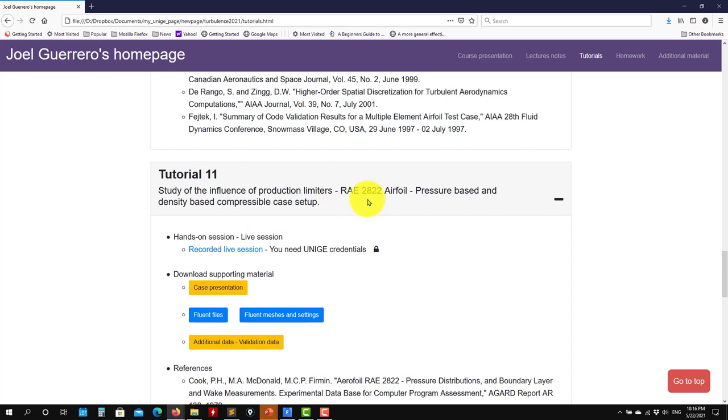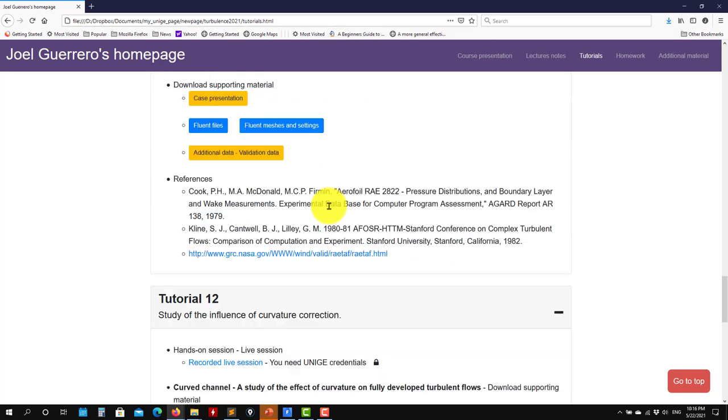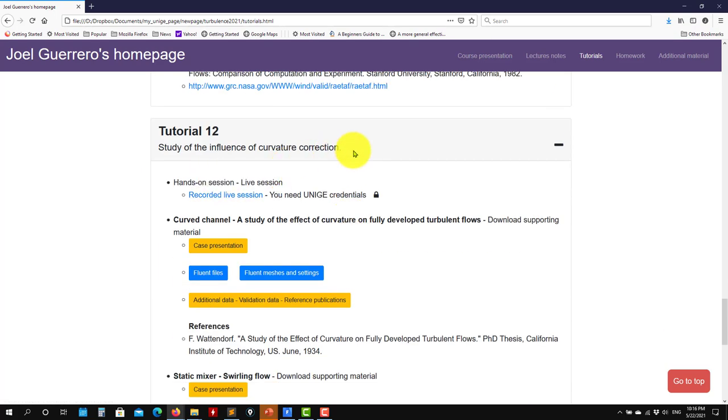In the previous one we addressed the production limiter. So this is the other important one. Remember that there are many these models, the viscosity models, they have many deficiencies or limitations that can be overcome by adding a small modification, but these two are the most important ones.